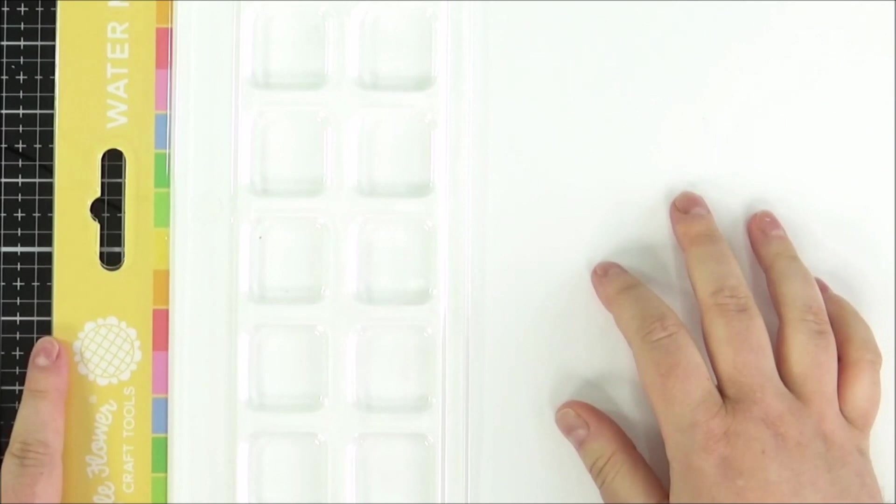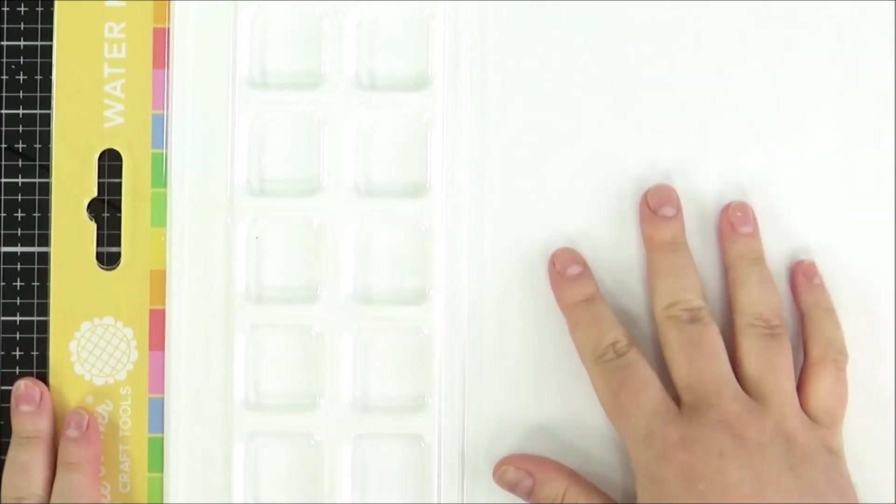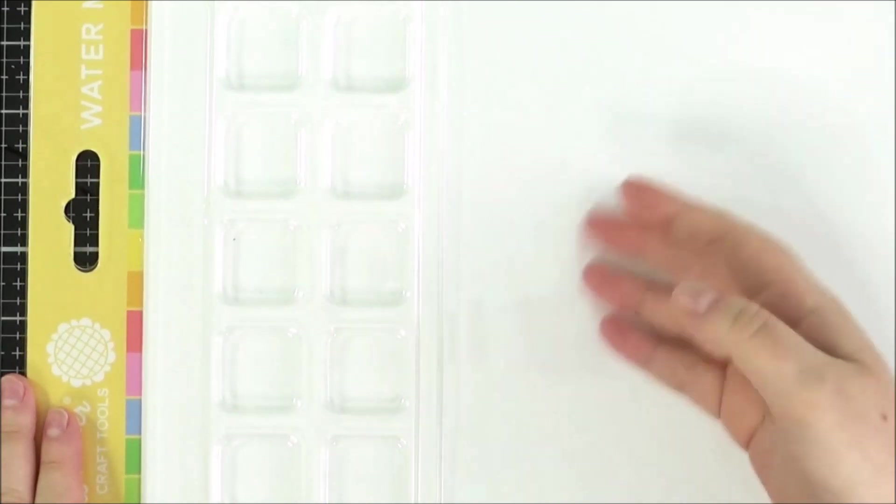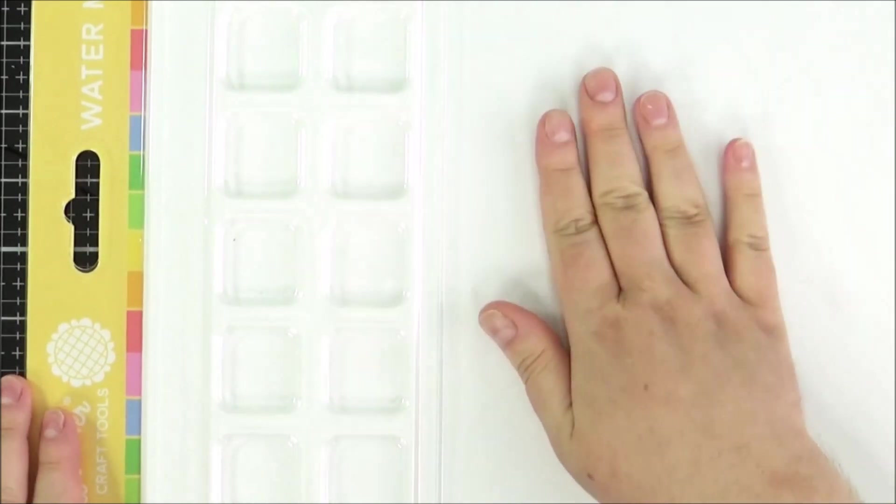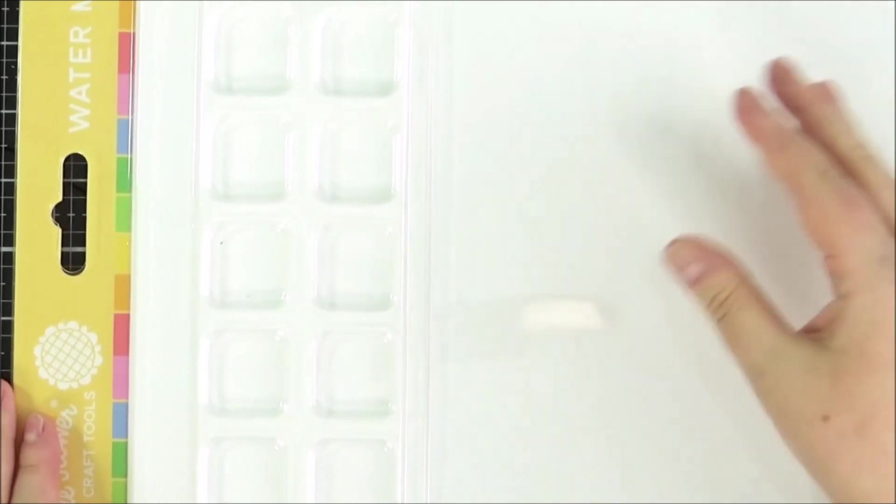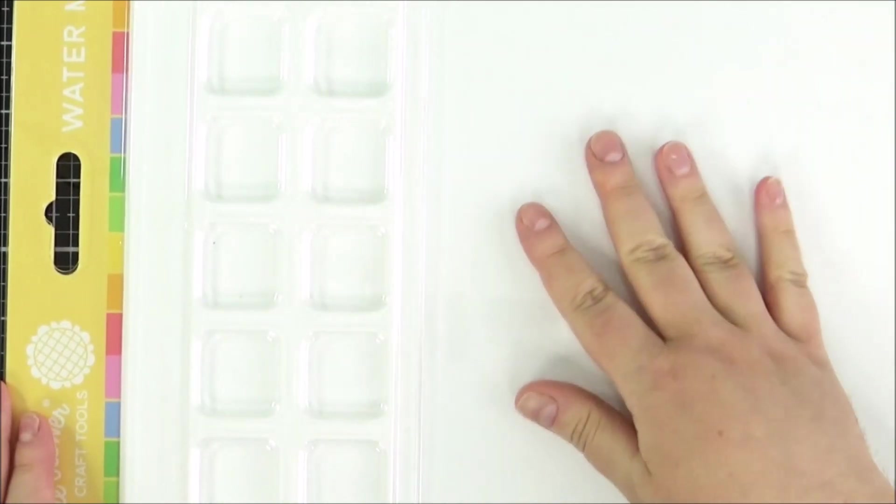I've got Tonic craft sheets. The difference with this one is that it's silicone and because it's silicone it's kind of grips to things so when you put your cardstock down on it if you're doing ink blending for example it kind of grips it so you don't it doesn't move around which is quite nice.